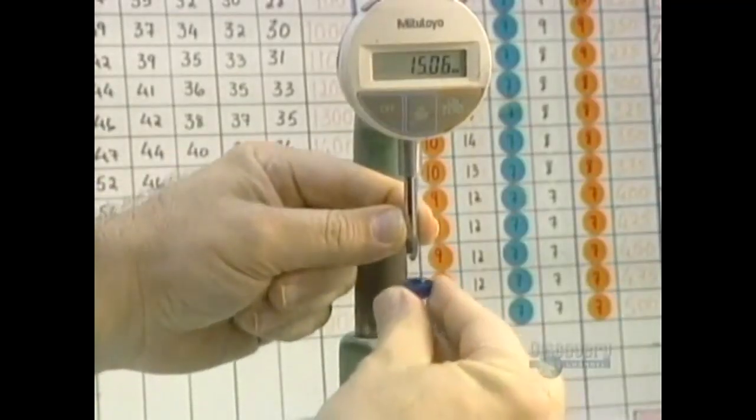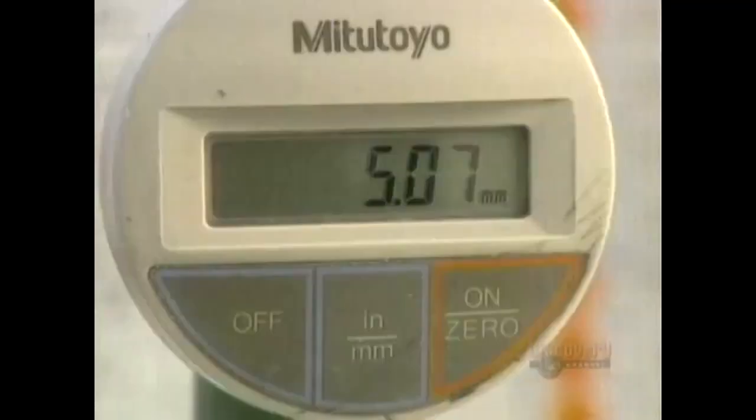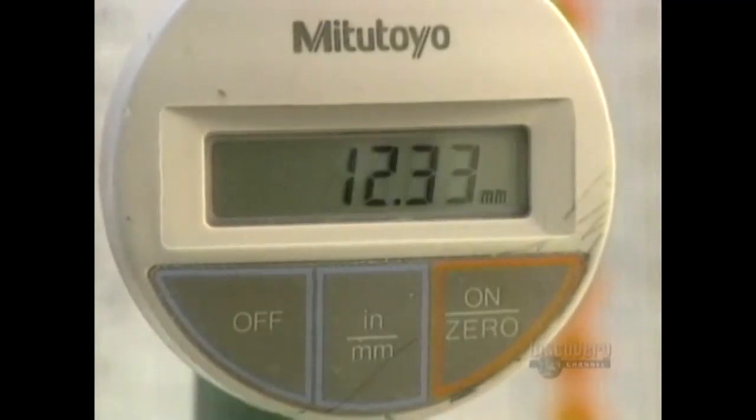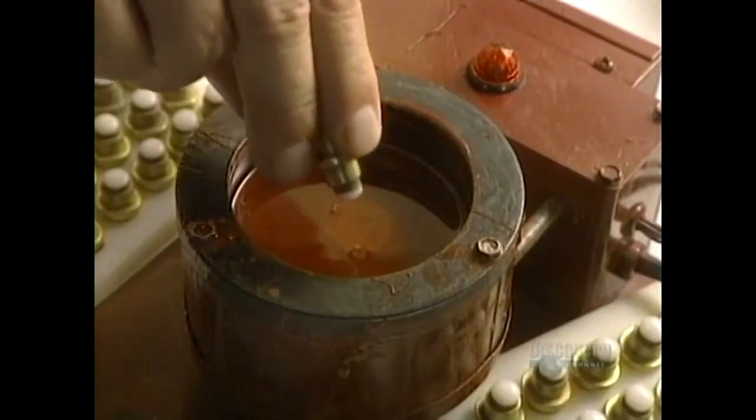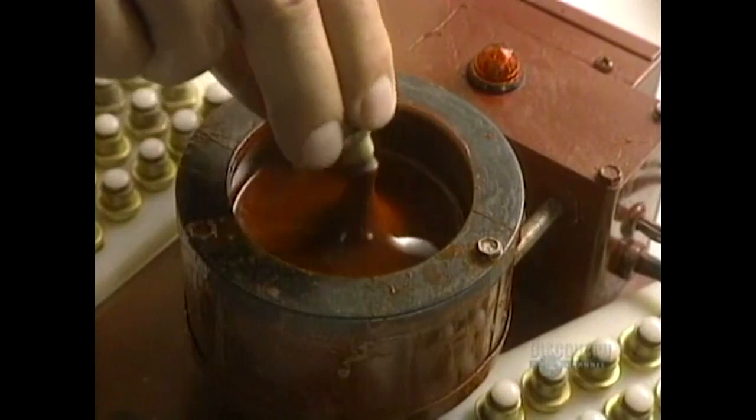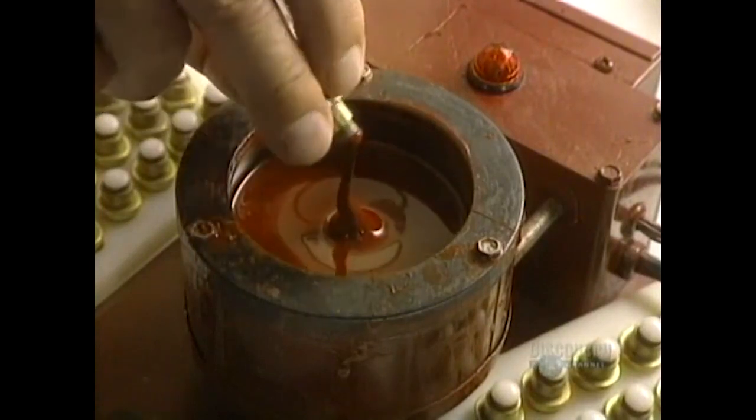A technician measures lens thickness with an extremely precise gauge. They now shape the outer surface, the part which touches the eyelid. The lens is glued with a special warm wax.